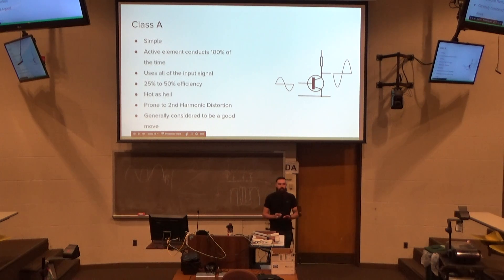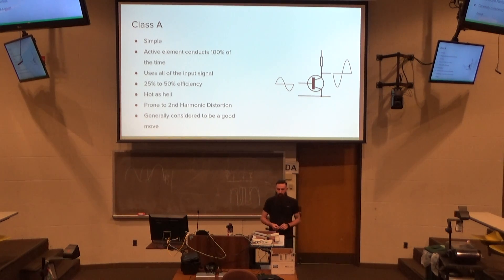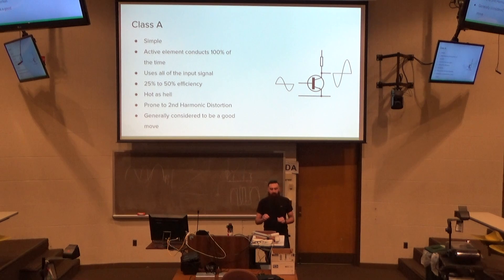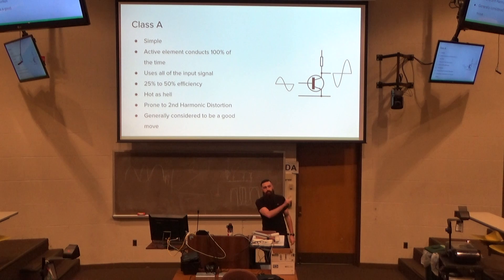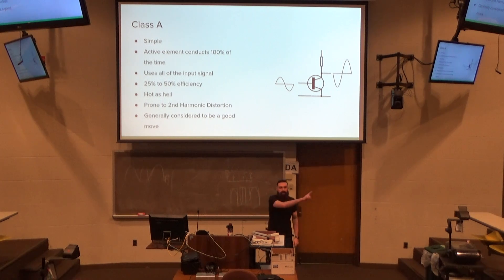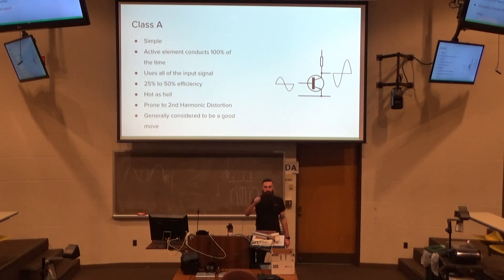This is a Class A amplifier. At its most basic level, this is what it looks like. The active element conducts 100% of the time. That means the MOSFET is always on — we are always passing current through it and using it to output the sine wave.